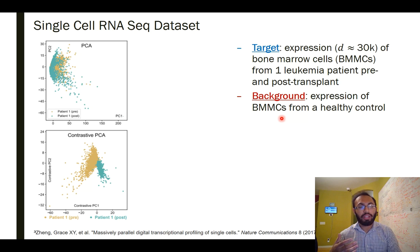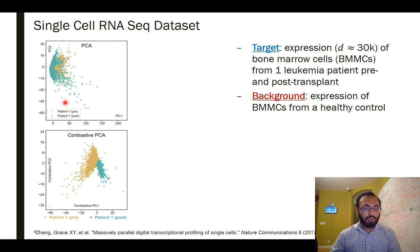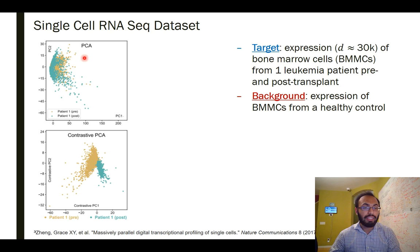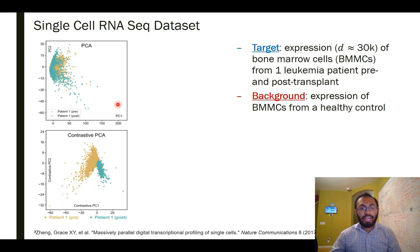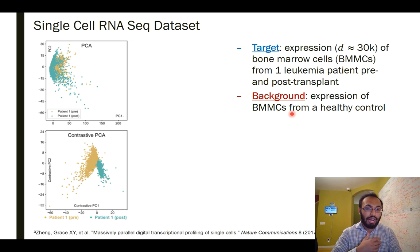Why does this work? The variation in the bone marrow cells may be due to many different factors — bone marrow cells are inherently a diverse group consisting of many different cell types, and that variation may be dominating and clouding out the variation due to pre-transplant versus post-transplant cells. Introducing bone marrow cells from a healthy control allows us to remove that source of variation and really only see the variation due to pre-transplant versus post-transplant.